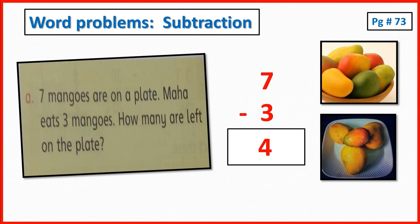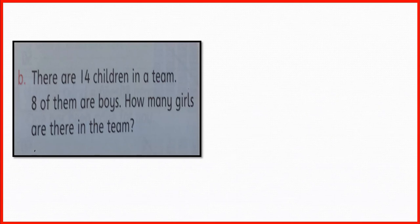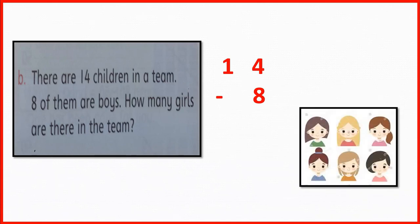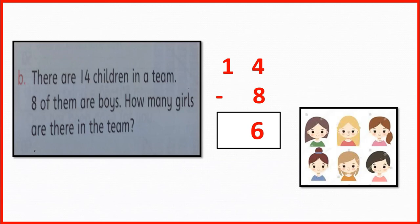That means when 3 subtracts from 7, the number remains 4. The next one is: there are 14 children in a team. 8 of them are boys. How many girls are there in a team? There are 14 children and 8 of them are boys. There are 6 girls in a team. That means 14 minus 8 equals 6. When 8 subtracts from 14, the number remains 6.